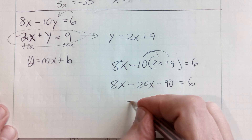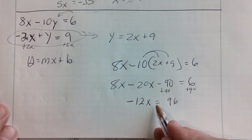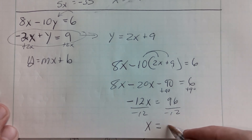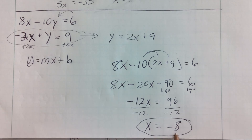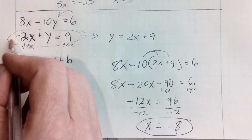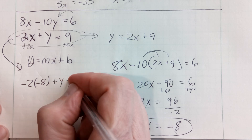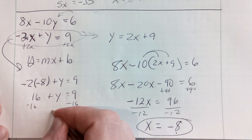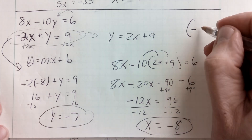8x minus 20x will be negative 12x. I'm going to add 90 to both sides, which will equal 96. Divide by negative 12, and I get an x value of negative 8. Now I have my x value — that's not the final answer. I've got to still find out what my y value is. So I plug x equals negative 8 back in: negative 2 times negative 8 plus y equals 9. Negative 2 times negative 8 is 16, plus y equals 9. Minus 16 from both sides, and I get y equals negative 7. My coordinate is (negative 8, negative 7).